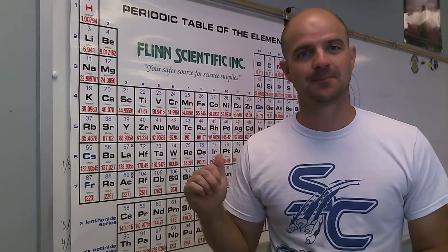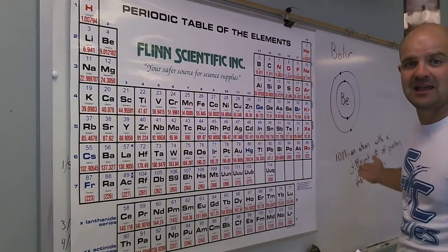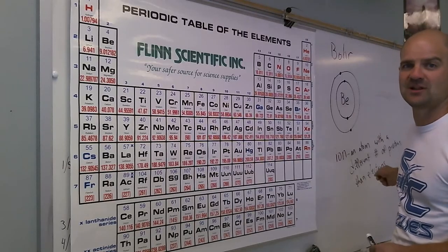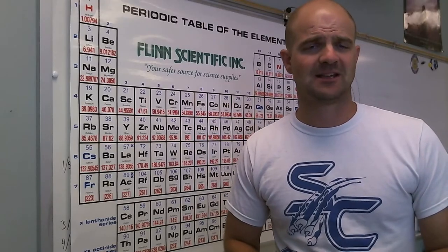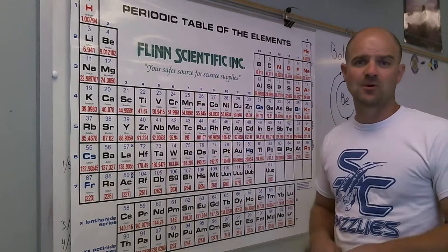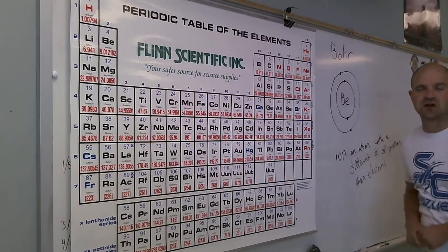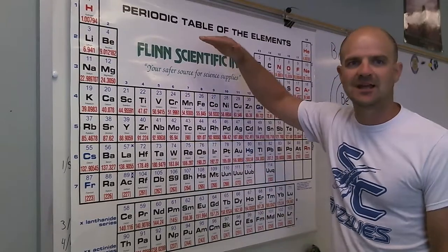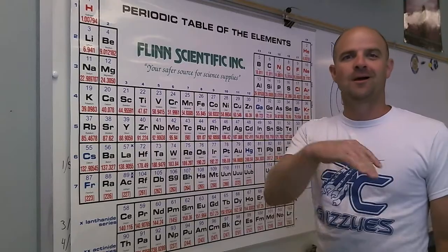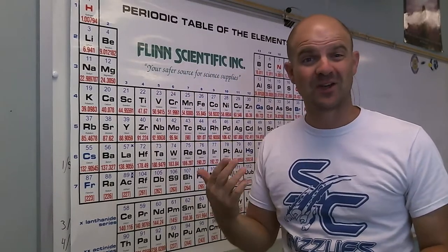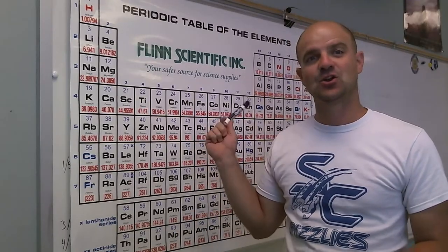So when we're doing a Bohr model of an element, and I say make me a Bohr model of beryllium, unless I tell you it's an ion, and I tell you what charge it is, you're going to assume, if it's not an ion, it must have the same number. If it's an ion, it has a different number of electrons than protons. If it's not an ion, then it has the same number of protons as electrons. So in this case, with beryllium, if it's got four protons, and it's not an ion, it would have four electrons as well. So we have two in that first energy level, and we put the other two on the second energy level.